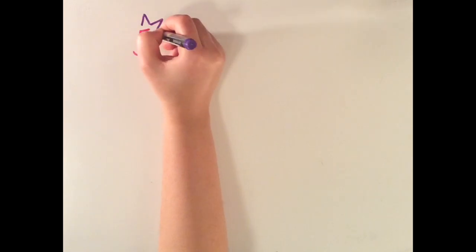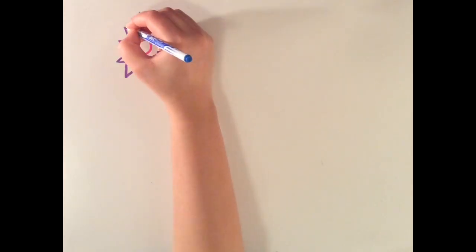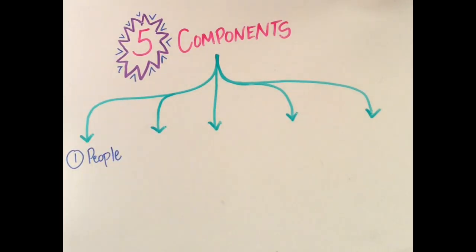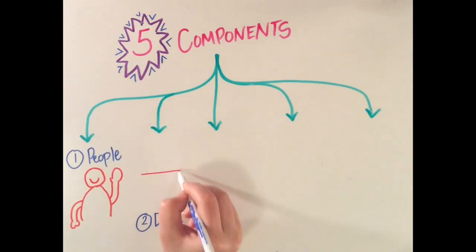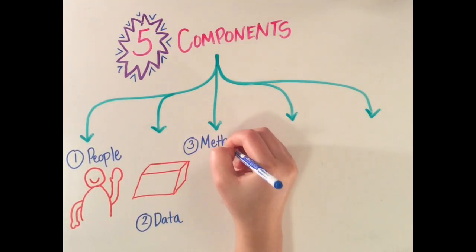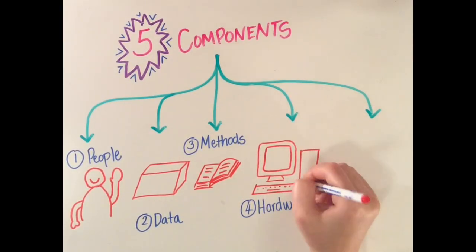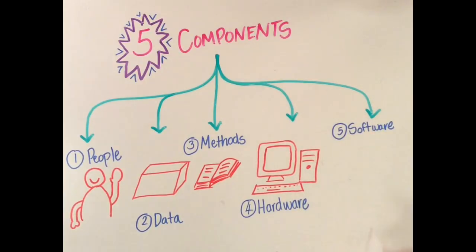According to Esri, one of the major GIS software companies, GIS systems have five major components: people (aka GIS experts), the data they are working with, their methods of analysis, the hardware or physical devices they are using, and finally the softwares or computer programs used for analysis. Put these five together and you have the working components of a complete GIS system.